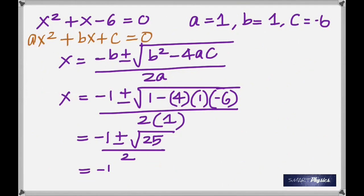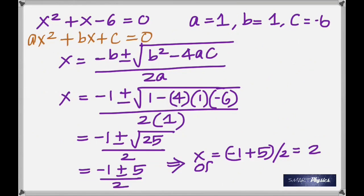So now you have minus 1 plus or minus 5, because square root of 25 is 5, divided by 2. That gives minus 1 plus 5 divided by 2, which is 4 divided by 2, which is 2.